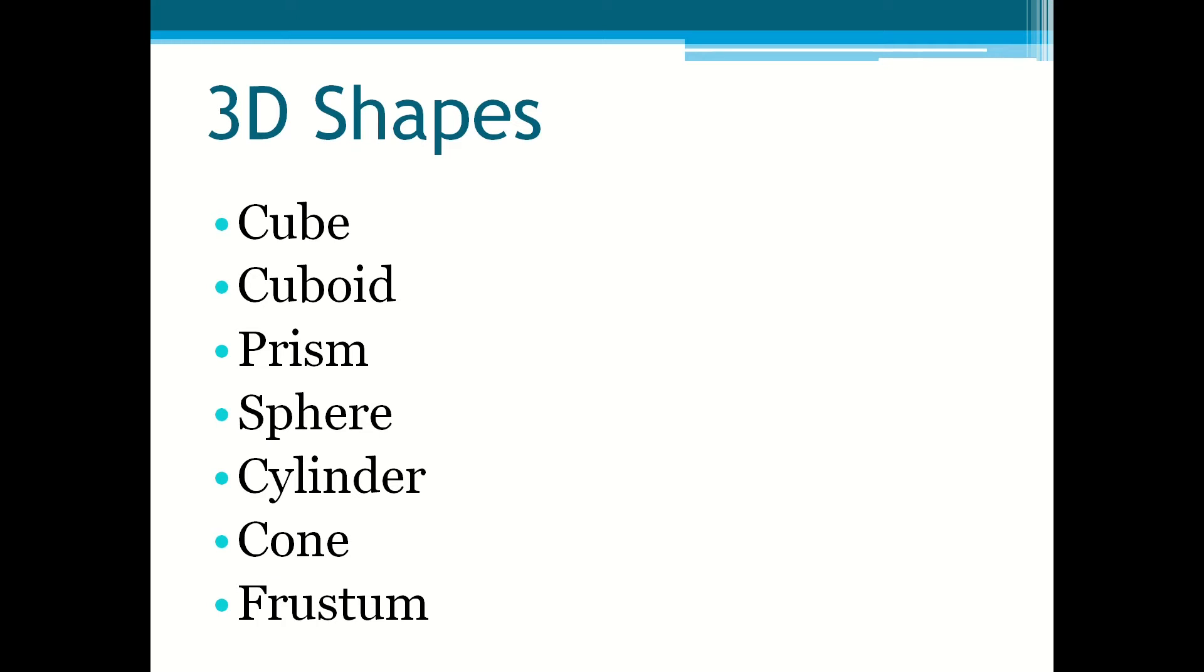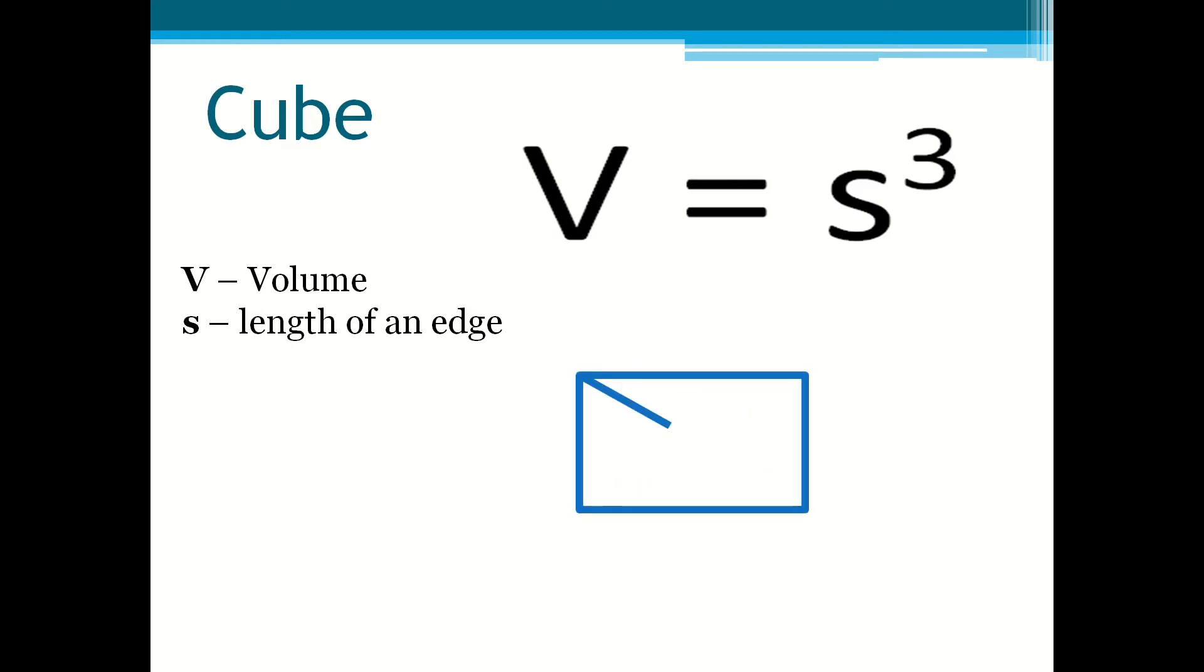The first one we will look at is cubes. The formula is volume equals the length of the side raised to the power of 3. V is for volume and s is the length of an edge. In a cube all the length of the edges are the same so you just raise the length of an edge to the power of 3.